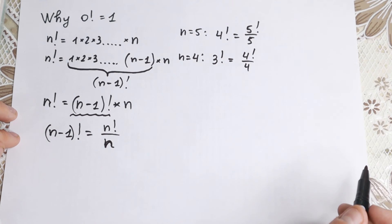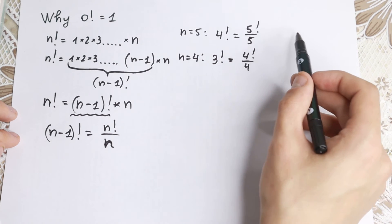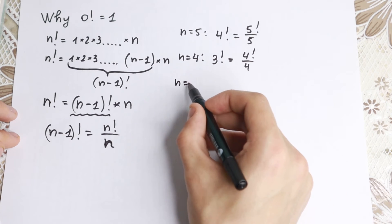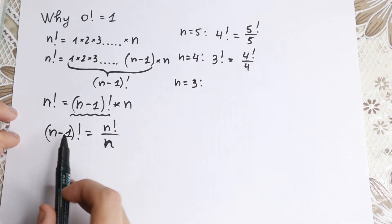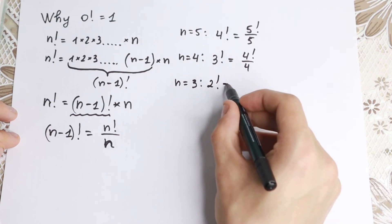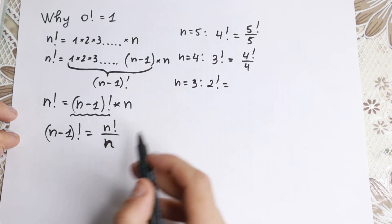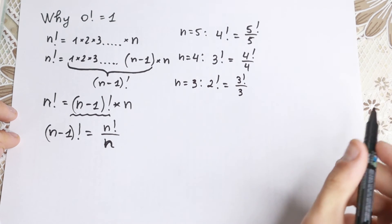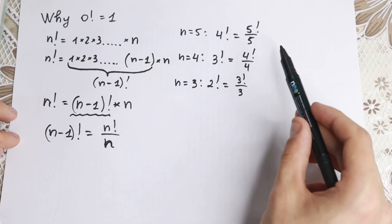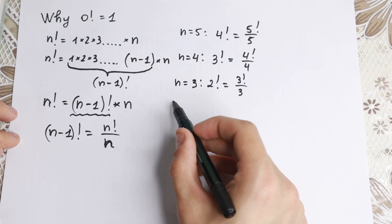Let's go closer. n equal to 3, 3 minus 1, 2 factorial, equal to 3 factorial over 3. And I hope you see a little bit closer and closer what is going on with this zero. Let's go closer and closer.